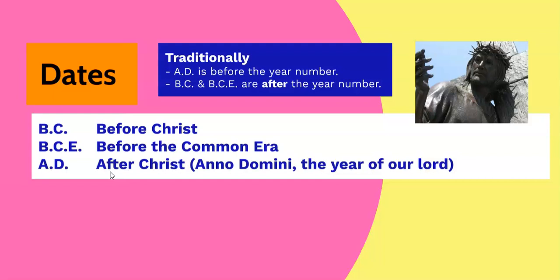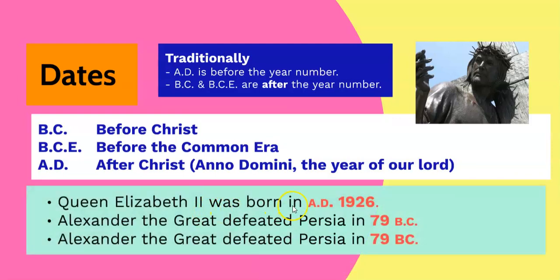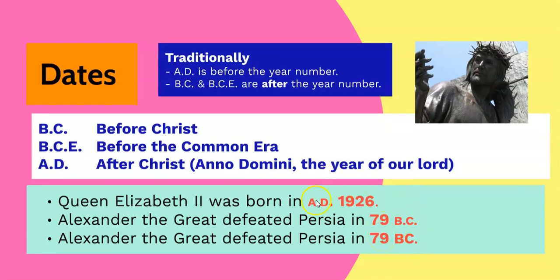Traditionally, when writing dates, we put the letters A.D. before the year number. For example, Queen Elizabeth was born in A.D. 1926. We put B.C. and B.C.E. after the year number — for example, Alexander the Great defeated Persia in 79 B.C. Traditionally, A.D., B.C., and B.C.E. are written in smaller capital letters, but this is becoming less popular. You might also see that the full stops used to abbreviate these words are missing, as we see in this example at the bottom.